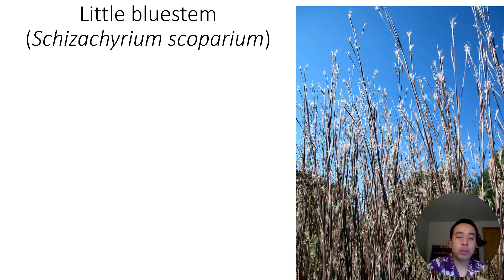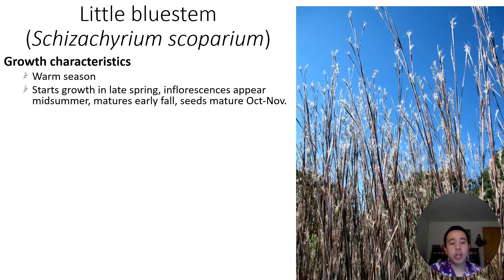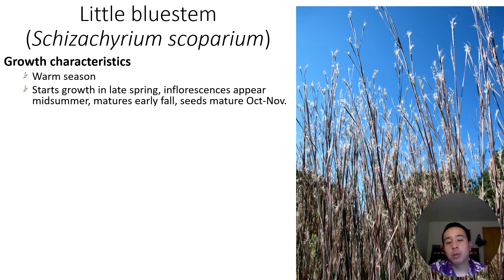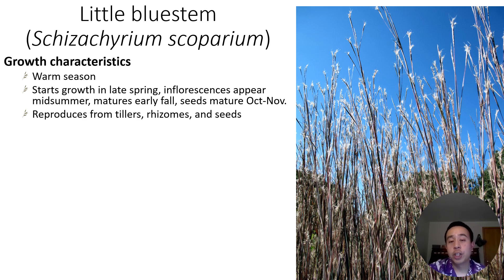In terms of little bluestem's growth characteristics, it's another warm season grass, which we haven't come across much except for this week — and we're going to want to think about why that is. It typically starts growth in late spring, and the flowering stalks typically appear in mid-summer. It matures by early fall, with seeds maturing by October or sometimes November depending on weather. It can reproduce from seeds, but also from tillers and rhizomes — so it also has mechanisms to propagate asexually.